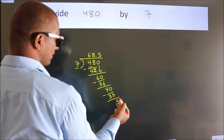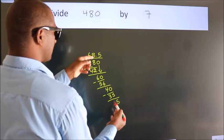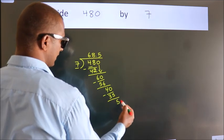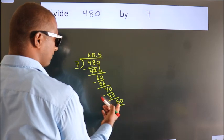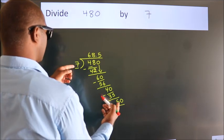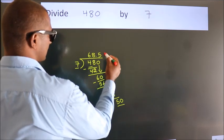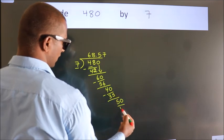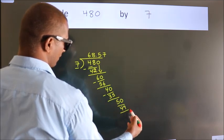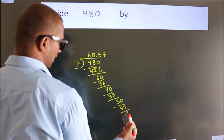After this, we already have the decimal, so directly take 0, so 50. A number close to 50 in 7 table is 7, 7, 49. Now we subtract. We get 1.